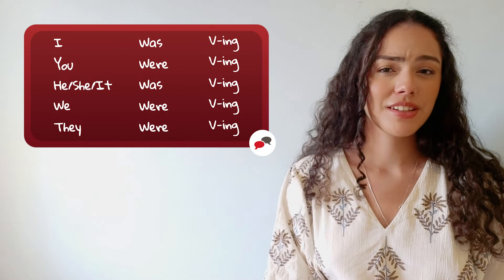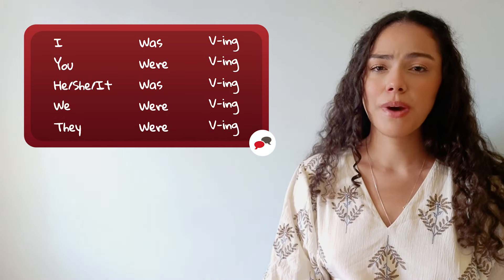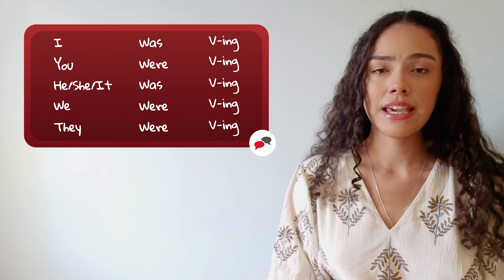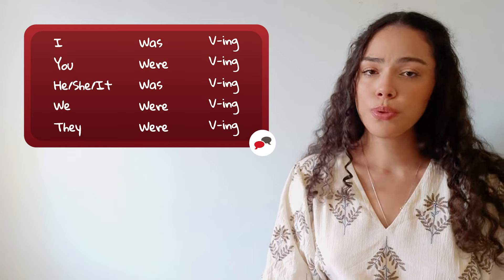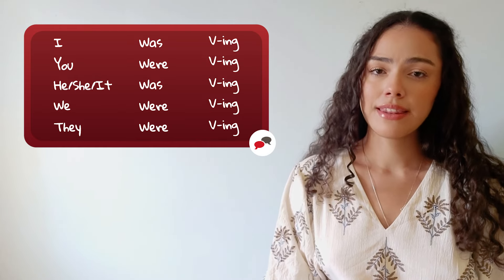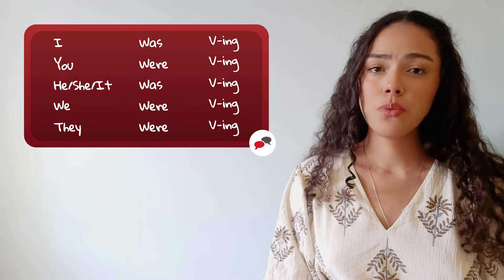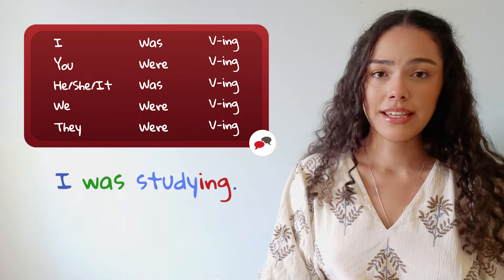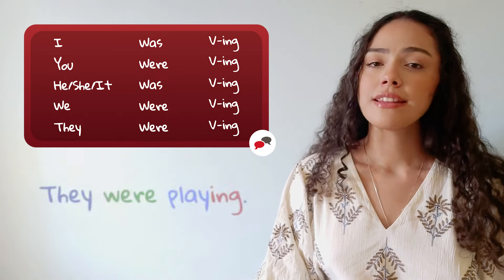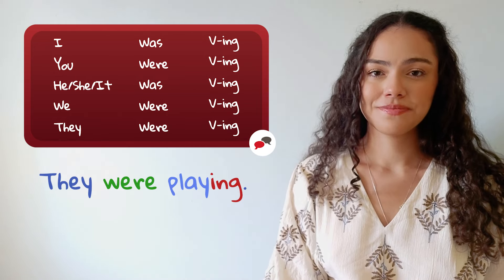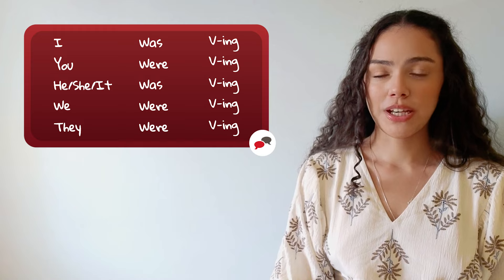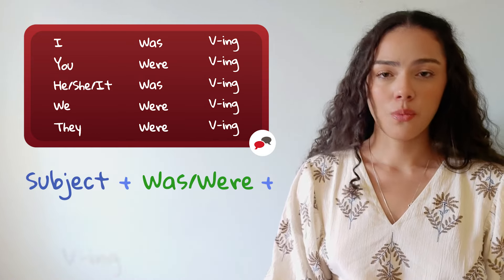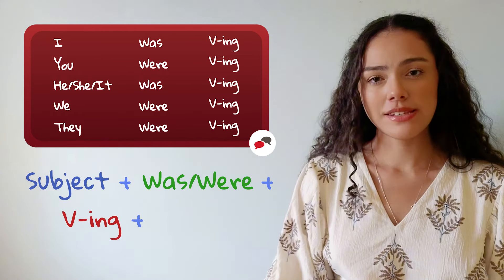To form the simple past continuous tense, start by using 'was' for singular subjects — I, he, she, it — and 'were' for plural subjects — you, we, they. Then add the main verb in ing form. For example, 'I was studying' or 'they were playing.' You can follow the formula: subject + was/were + verb-ing + object.